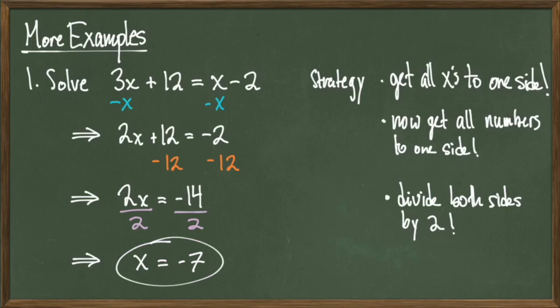When I started this problem, I talked about the decision of subtracting x from both sides versus subtracting 3x from both sides. I claimed that it didn't matter, and it doesn't. If we had started by subtracting 3x from both sides, even though the revised equations would have looked different throughout the process, we still would have landed at the exact same solution, x equals negative 7. As an exercise, start with 3x plus 12 equals x minus 2, subtract 3x from both sides as your first step, and you'll see that you get x equals negative 7.